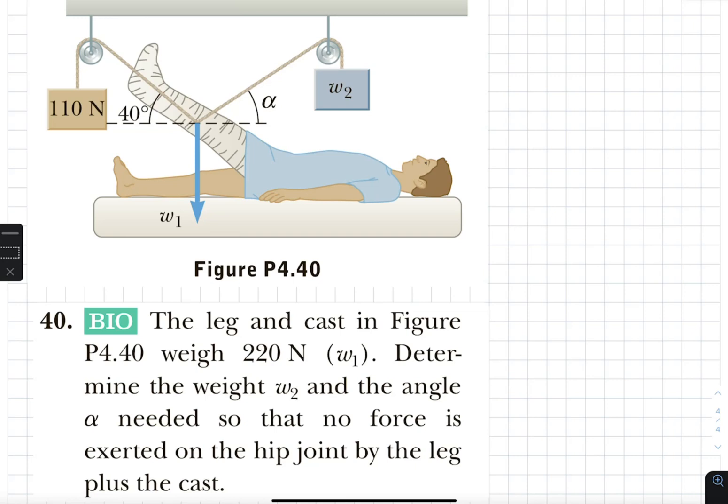we just have two ropes that are attached to our leg in a cast. And the way they are phrasing it, we need to figure out how those two ropes are supporting it so that no force is exerted on the hip joint by the leg plus the cast. In other words,